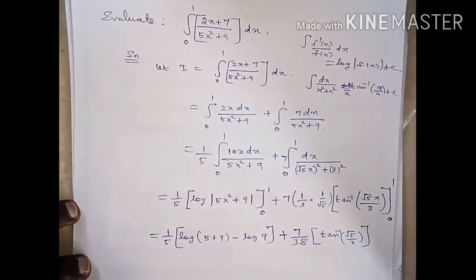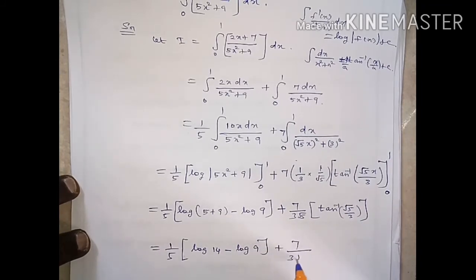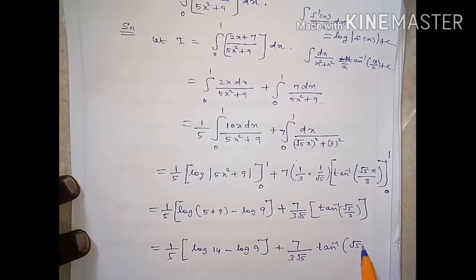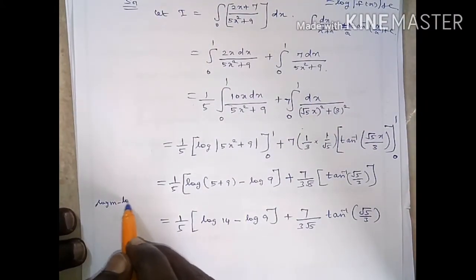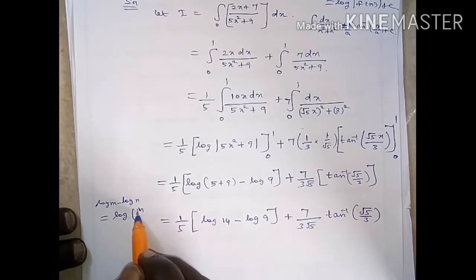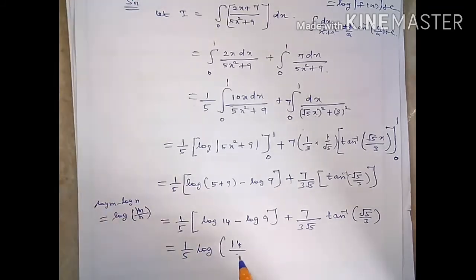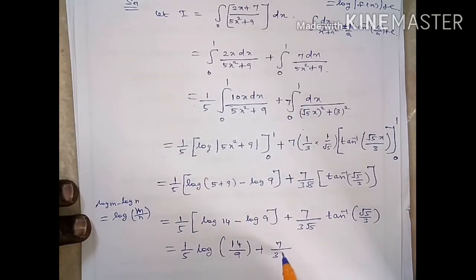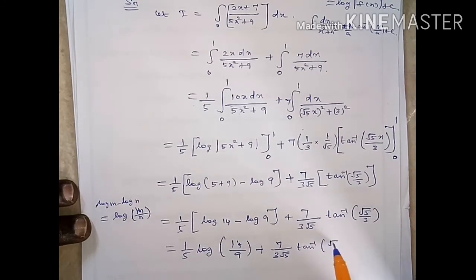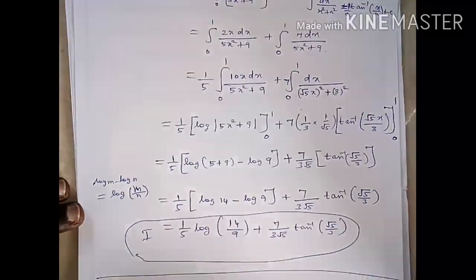Combining: 1 by 5 into (log 14 minus log 9) plus 7 by 3 root 5 into tan inverse of root 5. Using the log property log m minus log n equals log of m by n, the final answer is 1 by 5 into log of (14 by 9) plus 7 by 3 root 5 into tan inverse of (root 5 by 3).